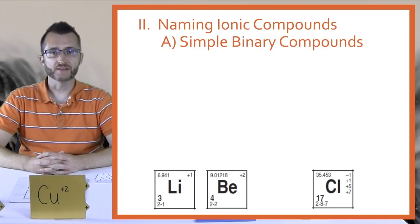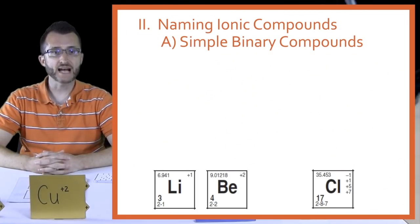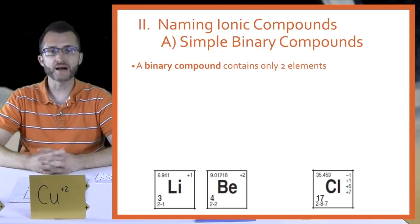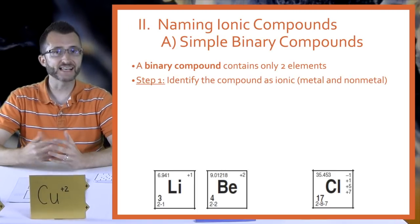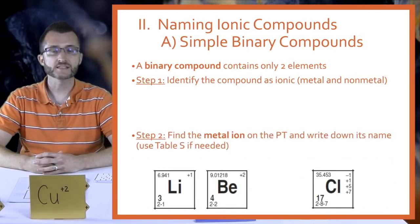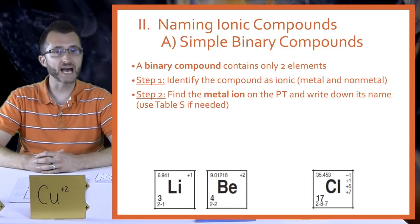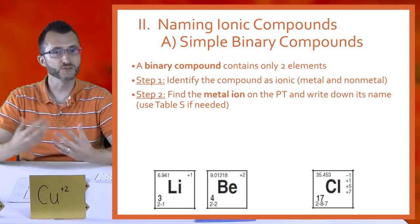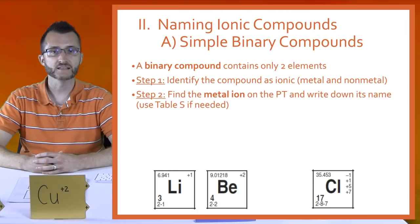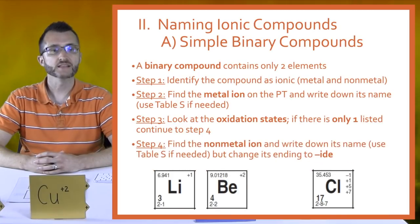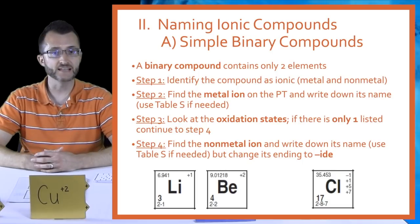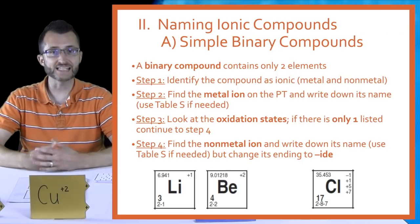Naming ionic compounds. Let's specifically begin with simple binary compounds. A binary compound contains two elements. Step one: identify the compound as ionic — make sure you look for your metal and nonmetal. Step two: find the metal ion on the periodic table and write down its name. You can use table S if needed. Step three: look at the oxidation states. If there is only one listed, continue to step four. Step four: find the nonmetal ion and write down its name.